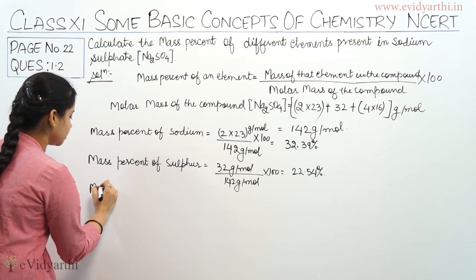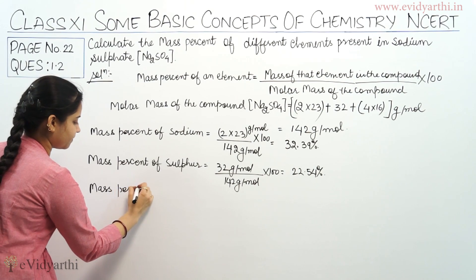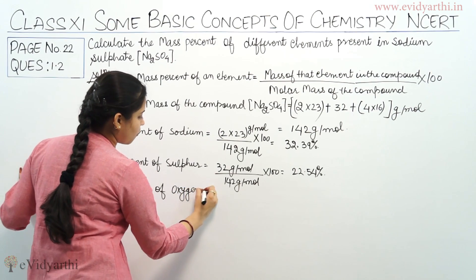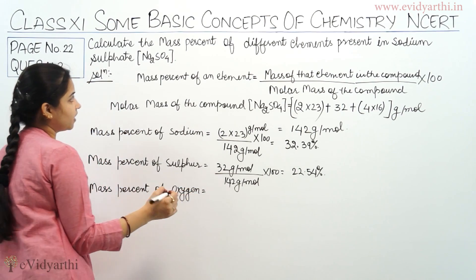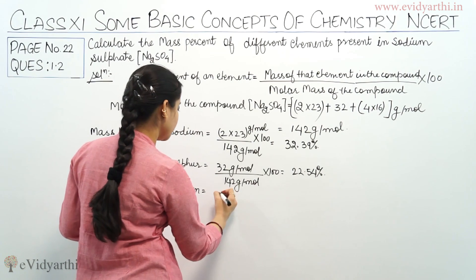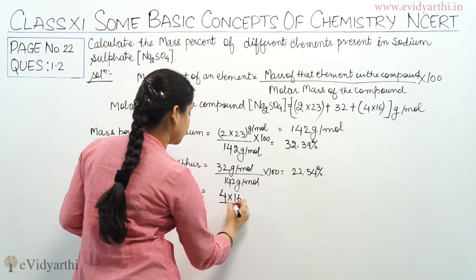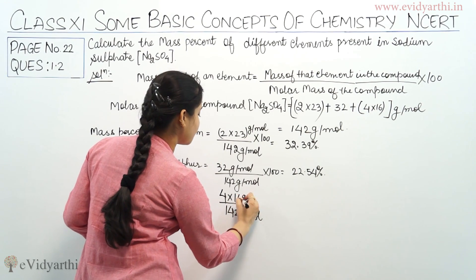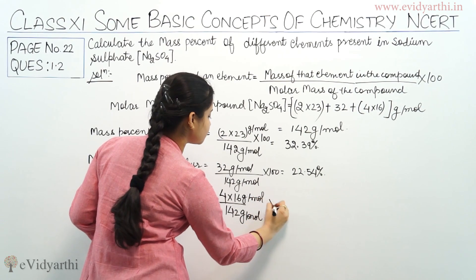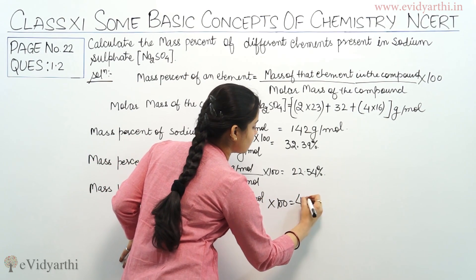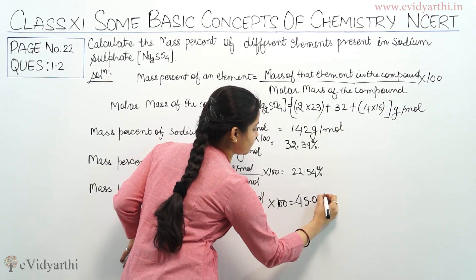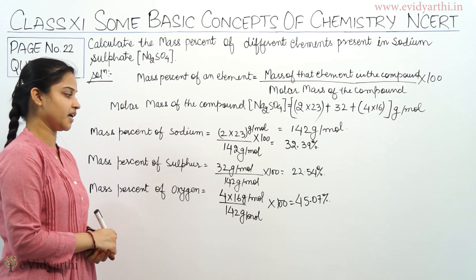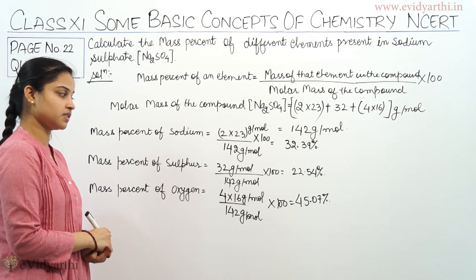Coming on to the mass percent of oxygen: we have 4 atoms of oxygen in sodium sulphate. So it is 4×16 divided by 142 grams per mole, multiplied by 100, and we get 45.07%. So the mass percentage of oxygen in sodium sulphate is 45.07%.